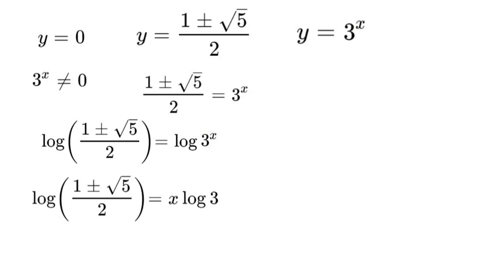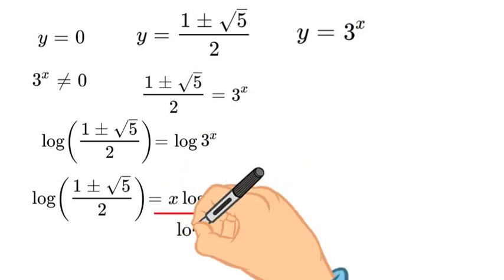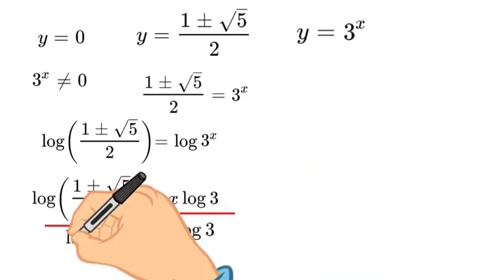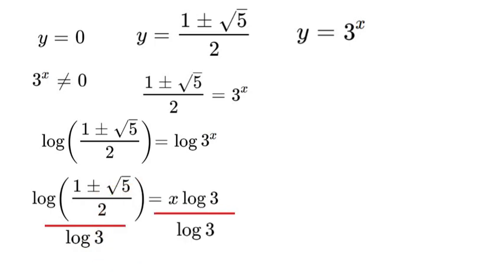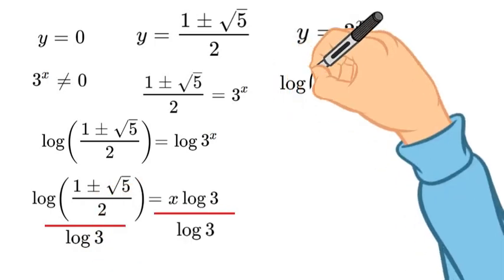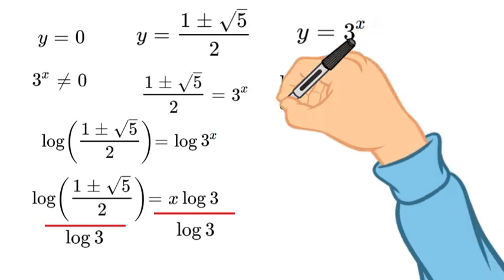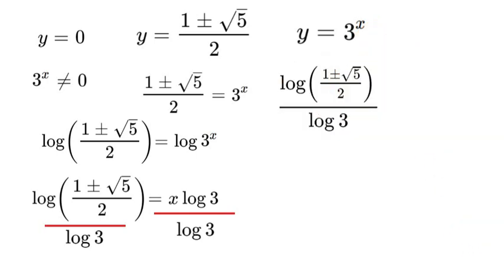Now that we have done that, we can divide both sides by log 3 so that we have x all by itself. Let's write that out over here. Once we've divided that out, that is what we get.